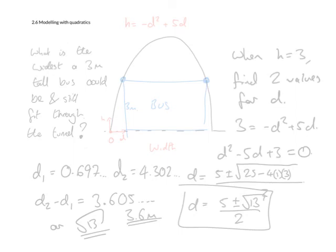In fact, that number is exactly the square root of 13, and if you subtract the two numbers in surd form, that's what you will get. So the distance, the maximum width our bus can be is 3.6 metres.